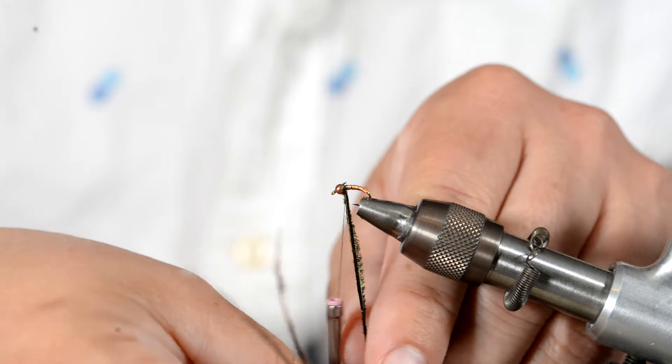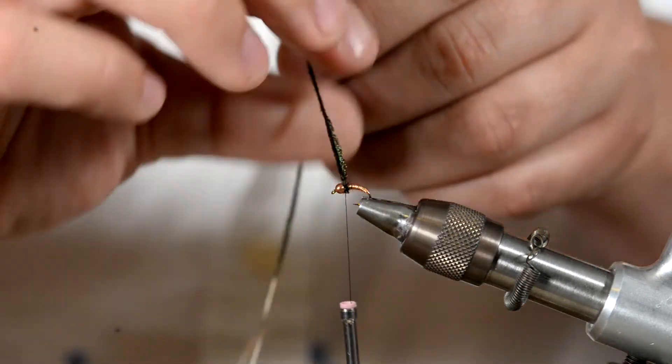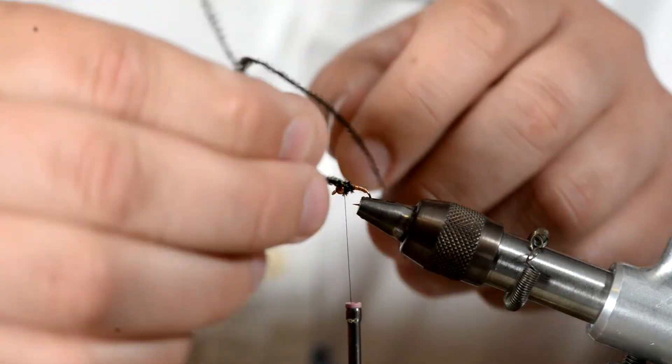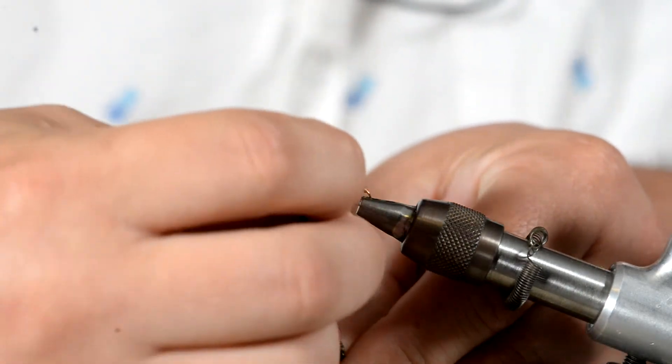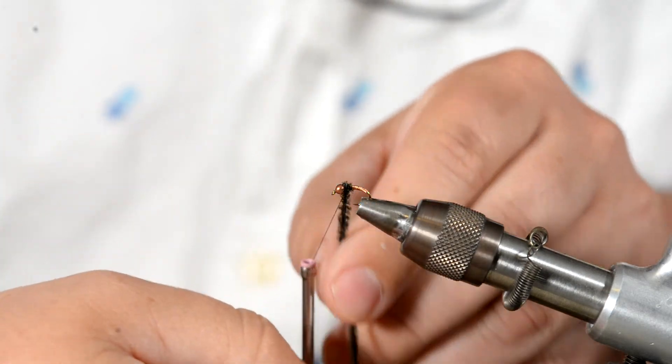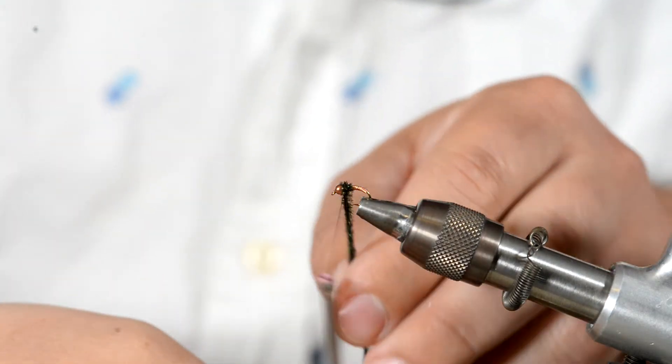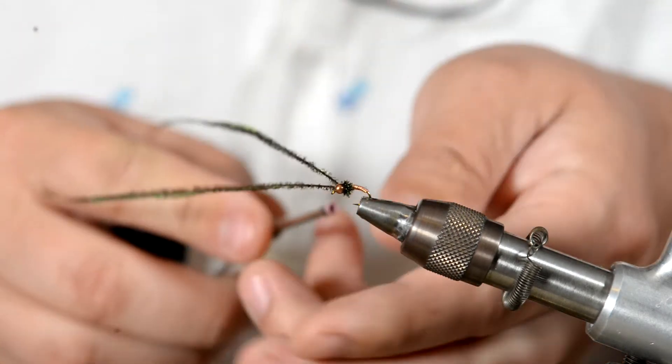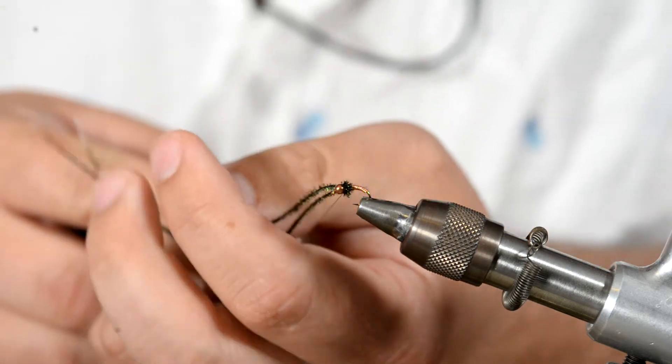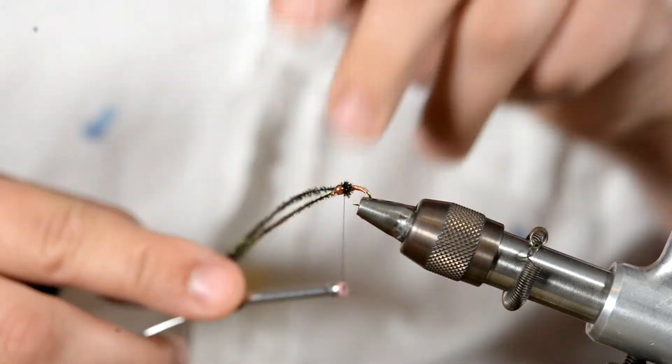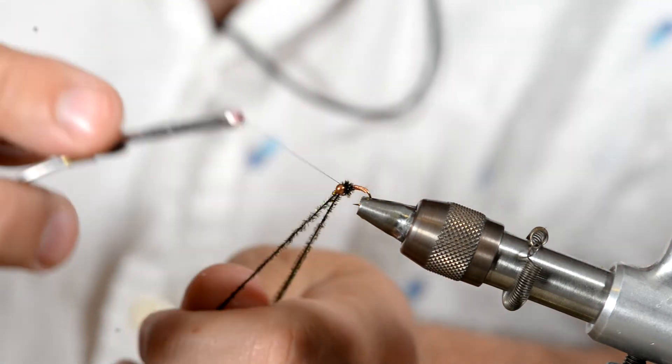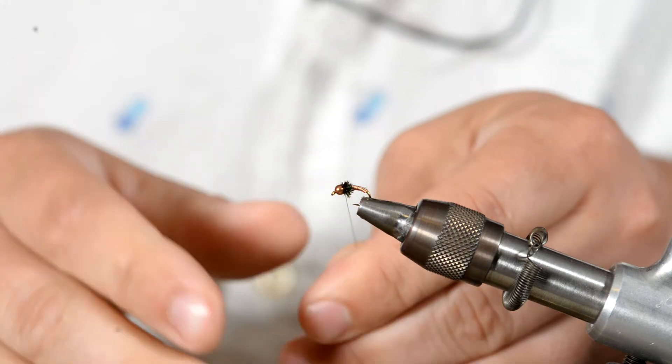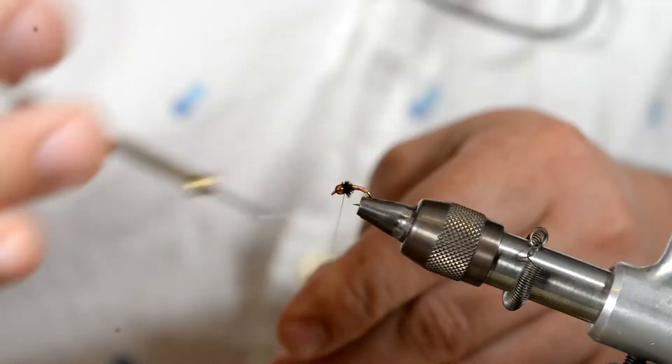So then just take your peacock herl and all we're doing is building up a nice collar. It doesn't have to be super big but I do want to see a little bit of bulk in it, just like so. Now once you have that, finish it by tying it down with your thread. Just getting those out of the way there and then what I like to do is just gently break them off and that's all there is to it.